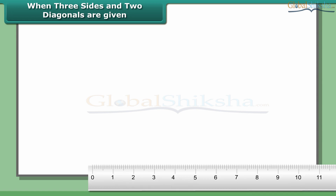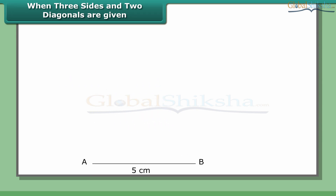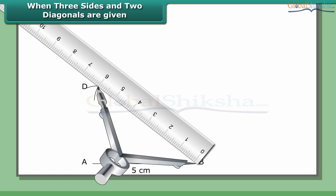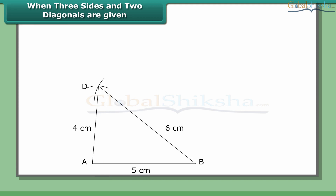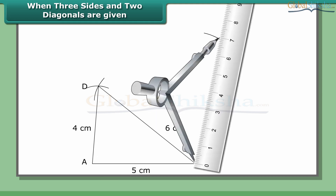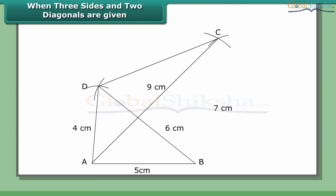Steps: Draw AB = 5 cm. With A and B as centers and 4 cm and 6 cm as radii respectively, draw arcs to cut each other at point D. Join AD and BD. With A and B as centers and 9 cm and 7 cm as radii respectively, draw arcs to cut each other at C. Join AC, BC, and also DC. ABCD is the required quadrilateral.